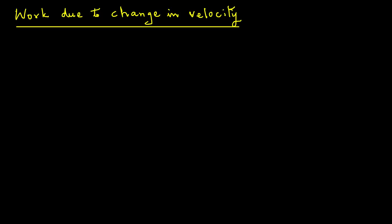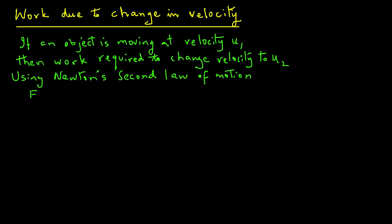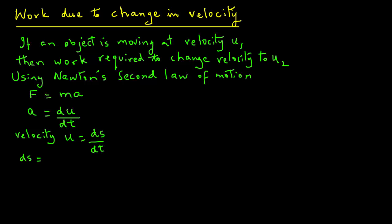Let's consider work due to change in velocity. An object moving at velocity u1 requires work to change its velocity to u2. Using Newton's second law, F equals ma, where acceleration a equals du/dt. Velocity is ds/dt, so ds equals u dt. Then work W equals F times ds, substituting F as m(du/dt) and ds as u dt.